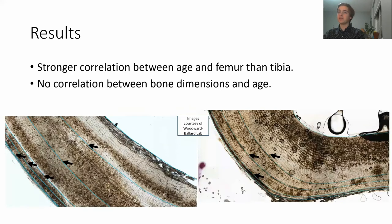I found that the youngest individuals in the data set usually had the same number of lines of arrested growth in their femur and tibia, while the oldest individuals had more lines of arrested growth in the femur than the tibia. As can be seen here, a nine-year-old elk has five lines of arrested growth in its femur and only three lines of arrested growth in its tibia.